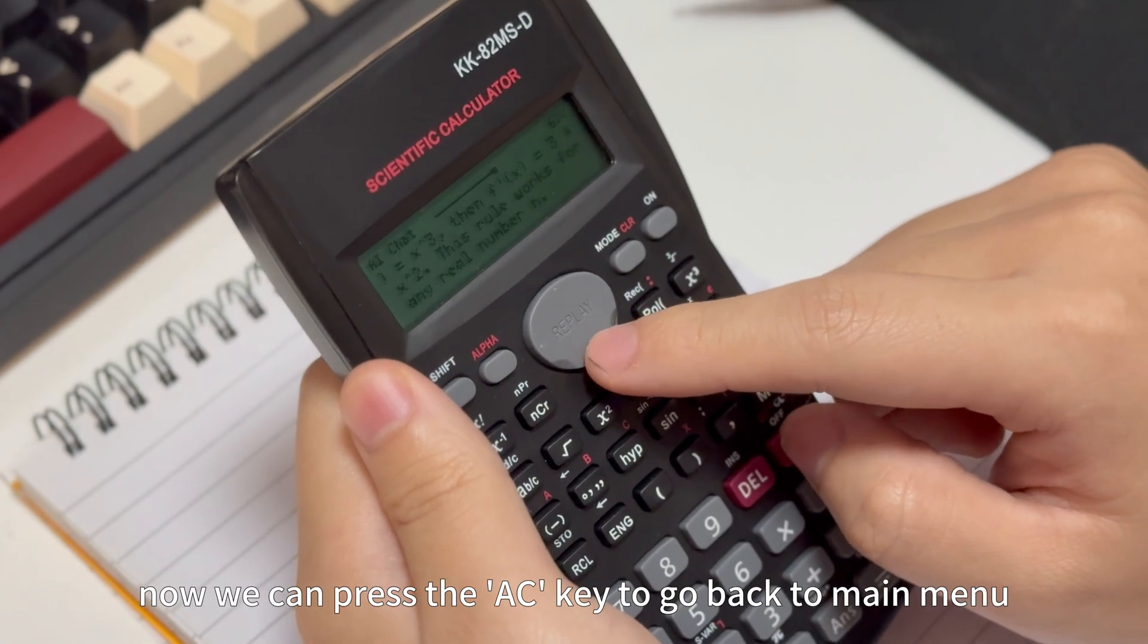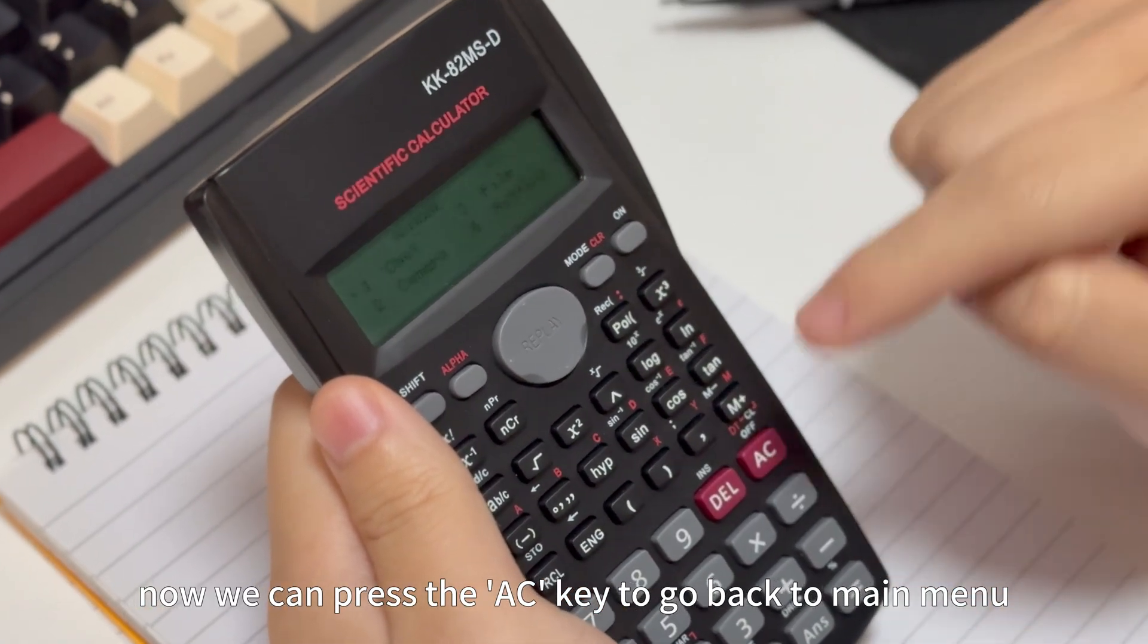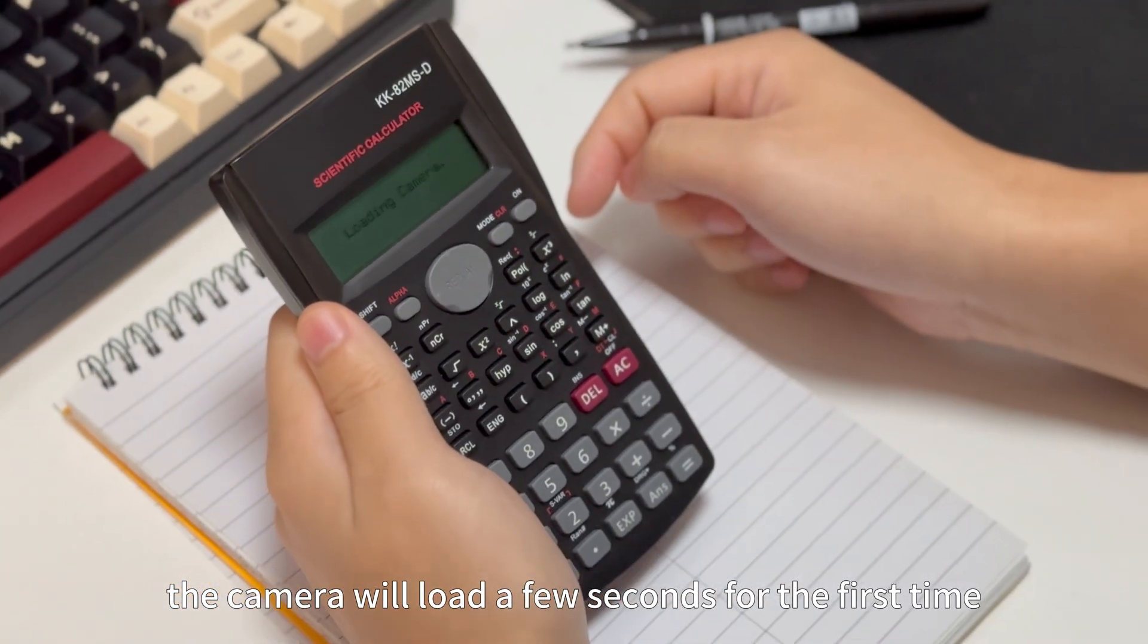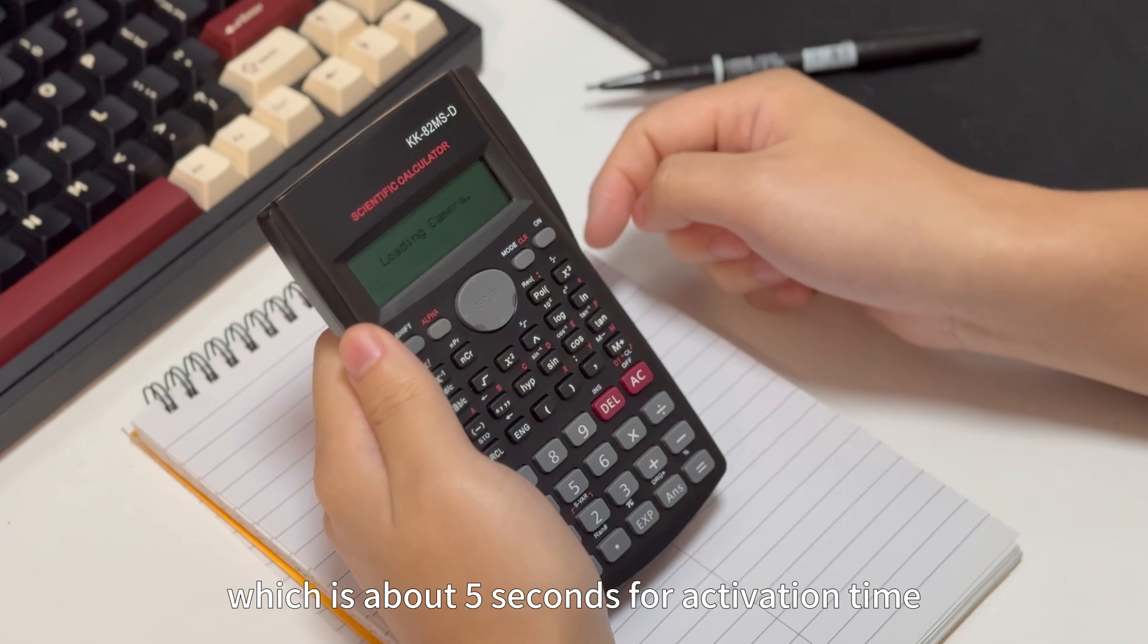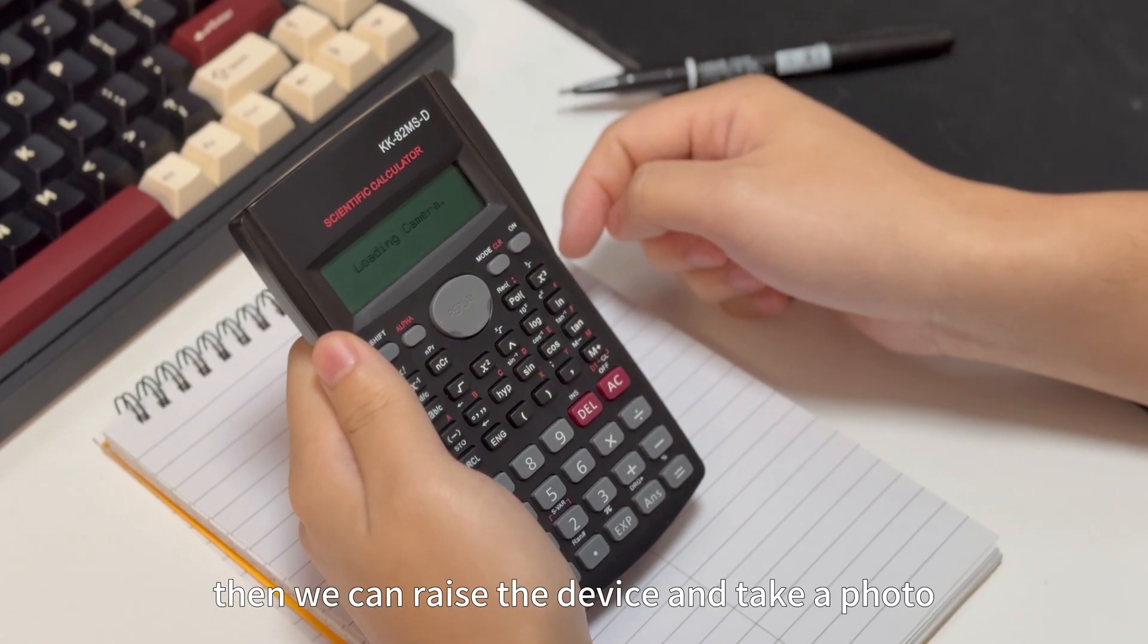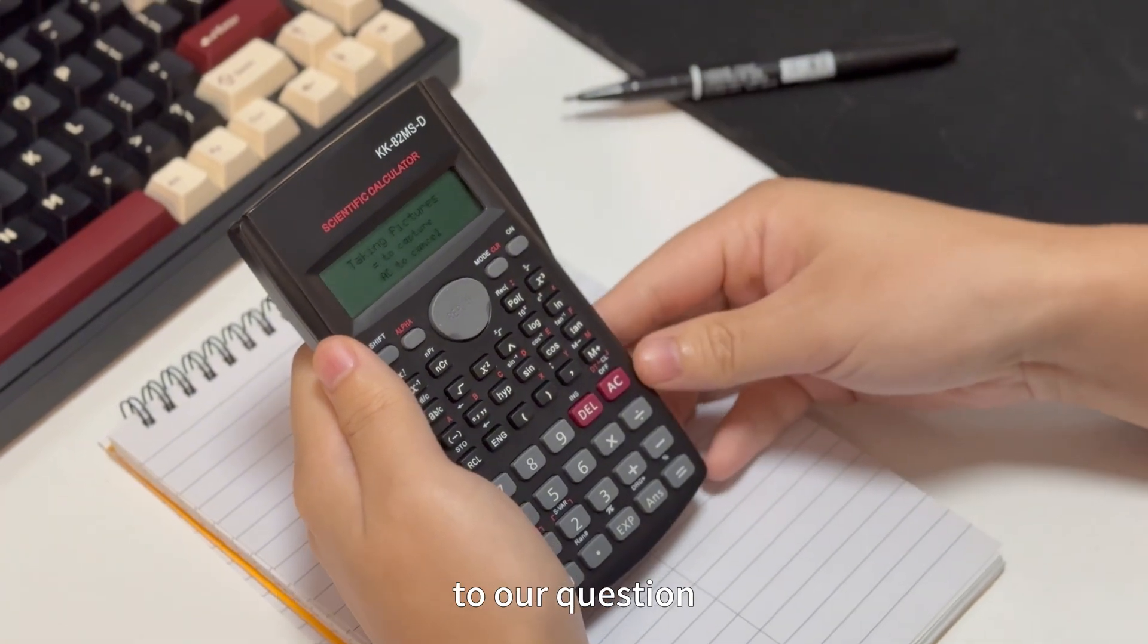Now we can press the AC key to go back to main menu. Use the AI camera mode. At this time, the camera will load a few seconds for the first time, which is about five seconds for activation time. Then we can raise the device and take a photo to our questions.